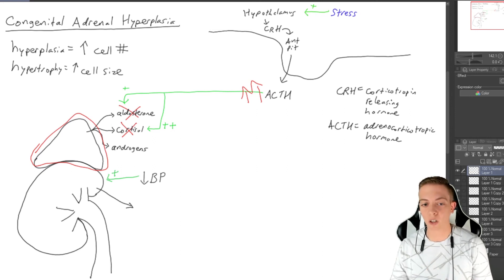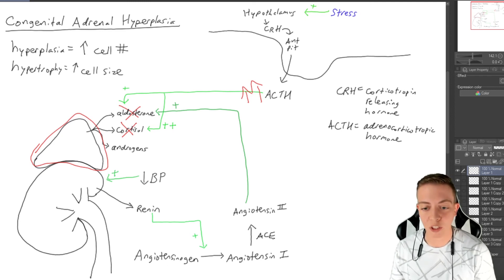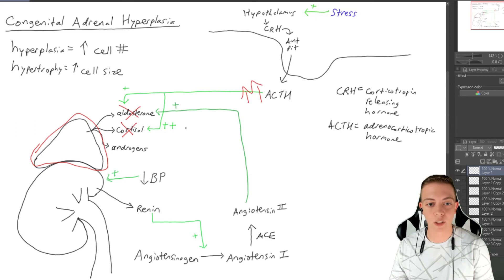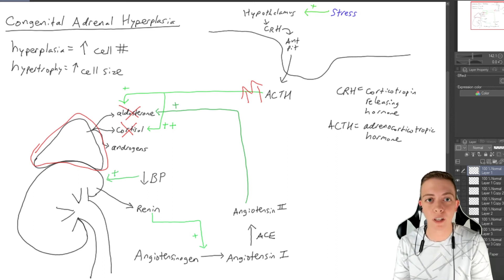Renin is responsible for converting a molecule called angiotensinogen to angiotensin 1. Then angiotensin 1 is going to be converted by ACE to angiotensin 2, which is going to cause release of aldosterone. But once again we can't produce aldosterone.